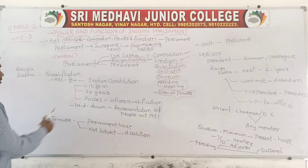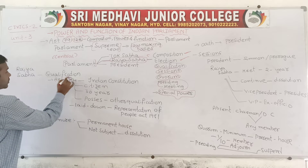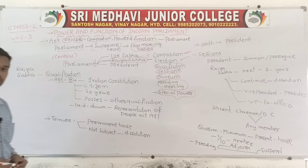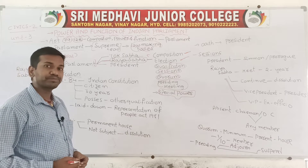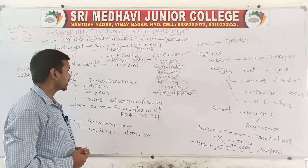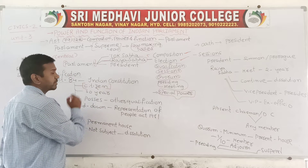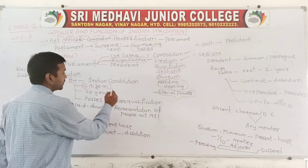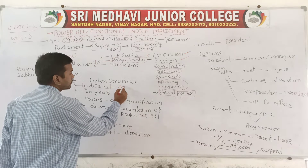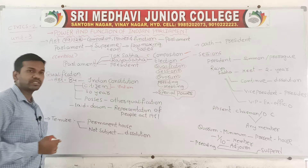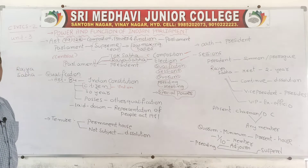Now we will study about the qualification. Article 84 of the Indian Constitution deals with the qualification of Rajya Sabha. The qualifications which are essential to become a member of Rajya Sabha: first, you should be the citizen of India. Citizenship is very important for any position, whether president or prime minister.